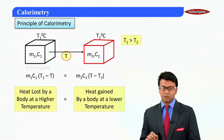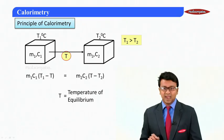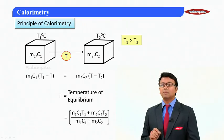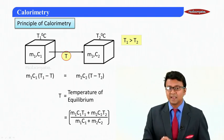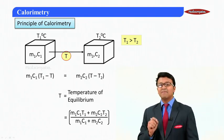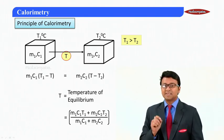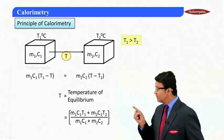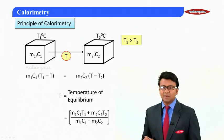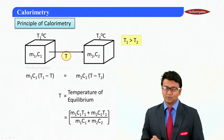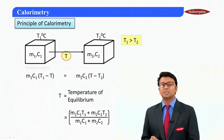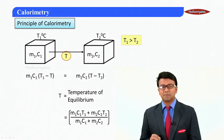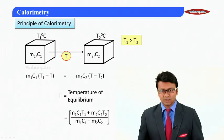Now T is the temperature of equilibrium. And if we solve it, we get the temperature of equilibrium as (m₁C₁T₁ + m₂C₂T₂) divided by (m₁C₁ + m₂C₂). So having done this students, we will be using the same concept in the numericals ahead. Thank you very much.